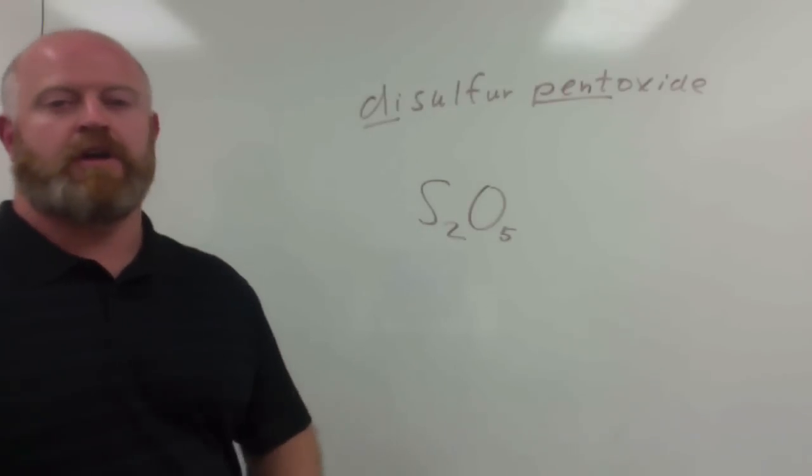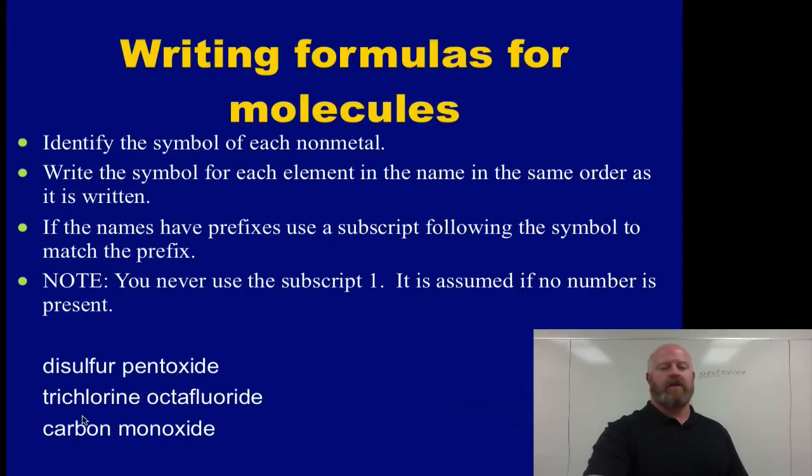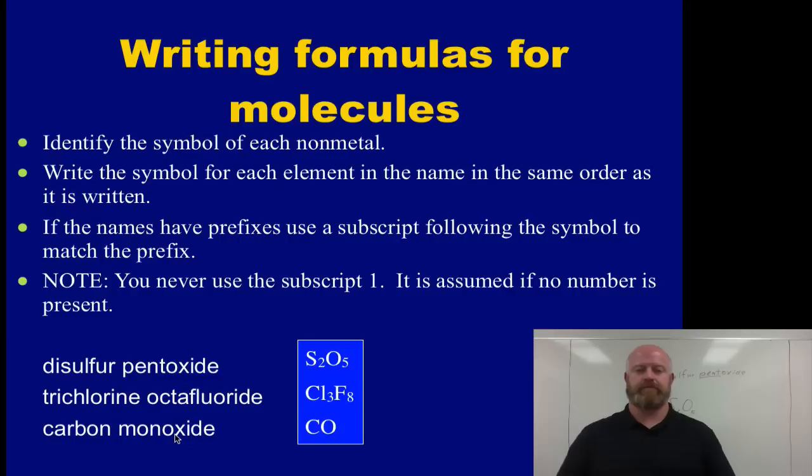If we follow the same thought process for trichlorine octafluoride, we have three chlorines and we have eight fluorides. And then carbon monoxide, we have one carbon and one oxide. So we should get those formulas accordingly. Okay guys, this is ending the video segment on writing simple molecules. You can now begin some more practice with this by looking at the right hand column on worksheet number one. That will give you an additional ten for each style of doing this formula you can do for practice. We will also practice this in class tomorrow. Thank you.